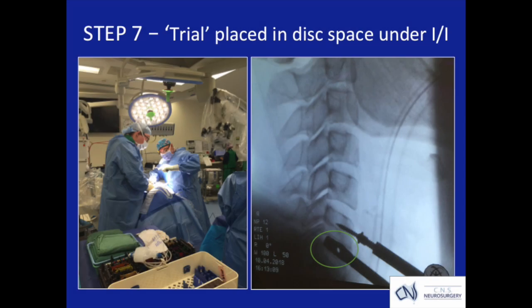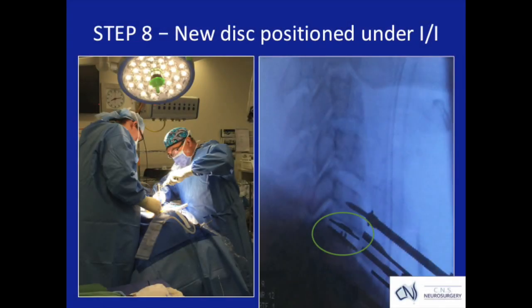The next image shows the trial device inserted into the intended disc space. It is carefully malleted into position under image guidance, and step eight shows the actual disc prosthesis now delivered to the disc space.